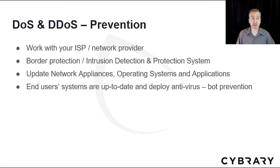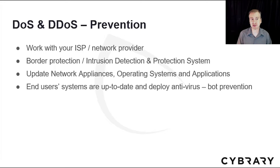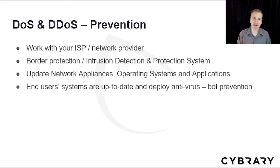There are many examples of DoS and DDoS attacks worth reading about. Ways to prevent or protect against them include working with your internet service provider or network provider, who will often provide layers of defense. You can also install border protection such as an intrusion detection and prevention system, keep network appliances, operating systems, and applications updated, and ensure end-user systems are up-to-date with antivirus deployed to reduce the prevalence of bots.